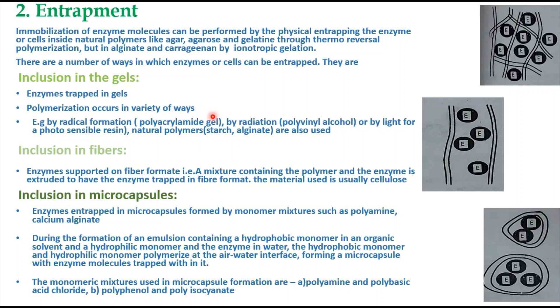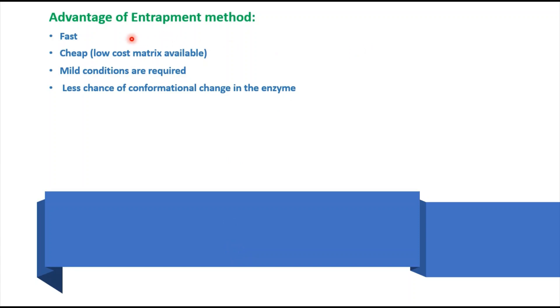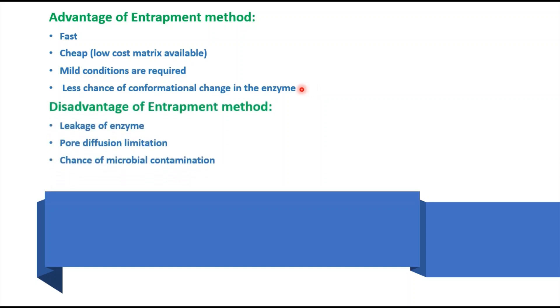The advantages of the entrapment method are: it is very fast and cheap, mild conditions are required, and there is less chance of conformational changes in the enzyme. The disadvantages include leakage of enzyme, poor diffusion limitations, and chances of microbial contamination. These are the two immobilization methods discussed — adsorption and entrapment — and the complete topic will be covered in another video.